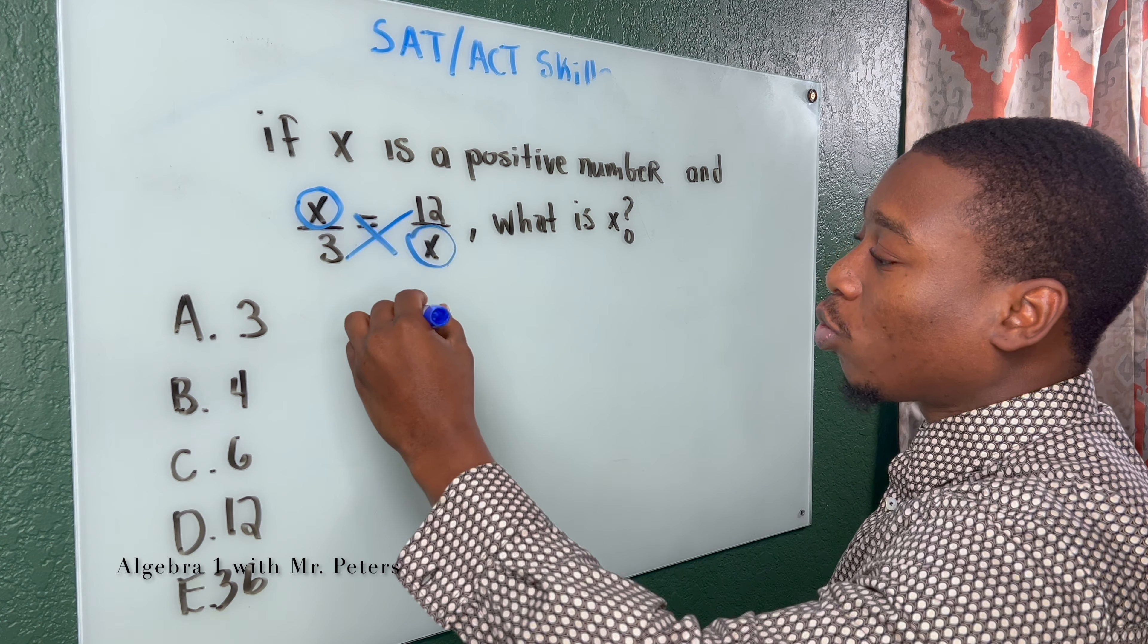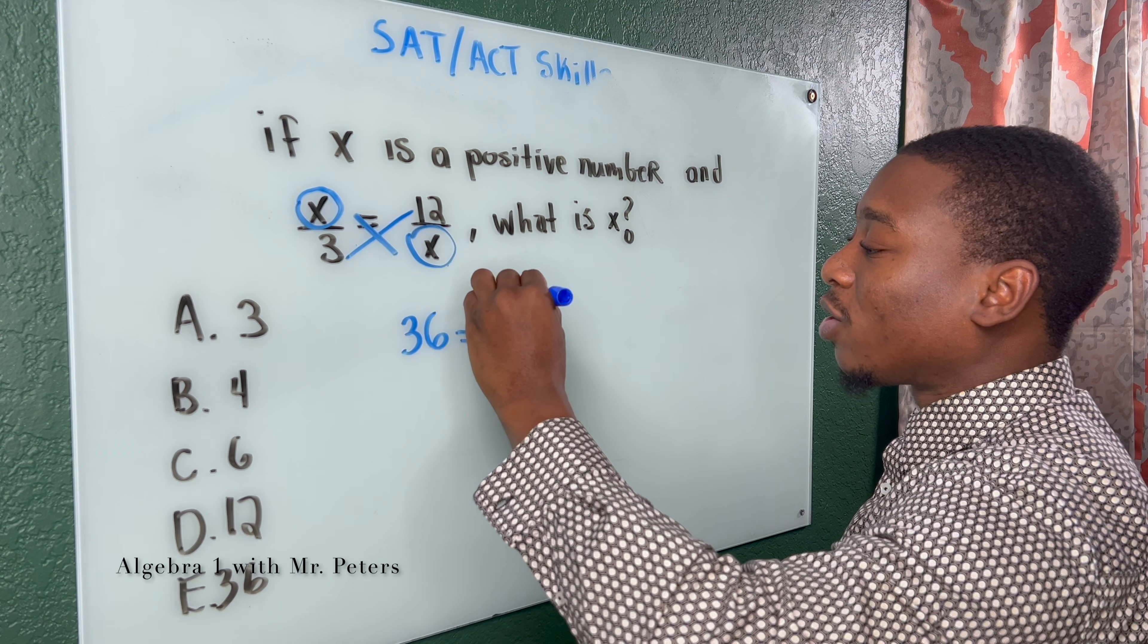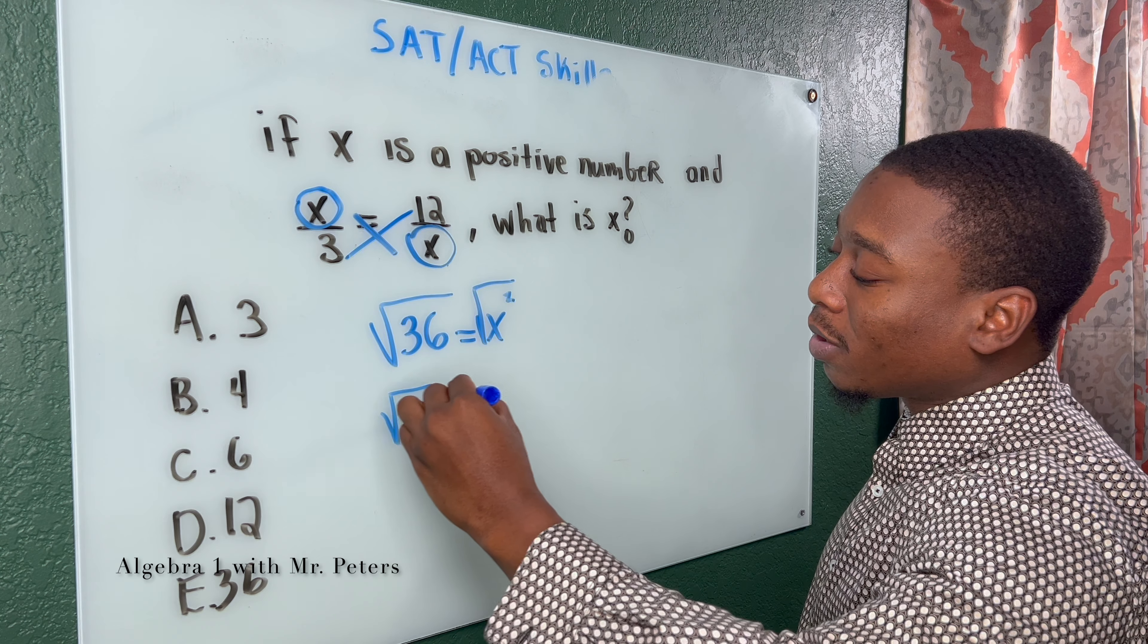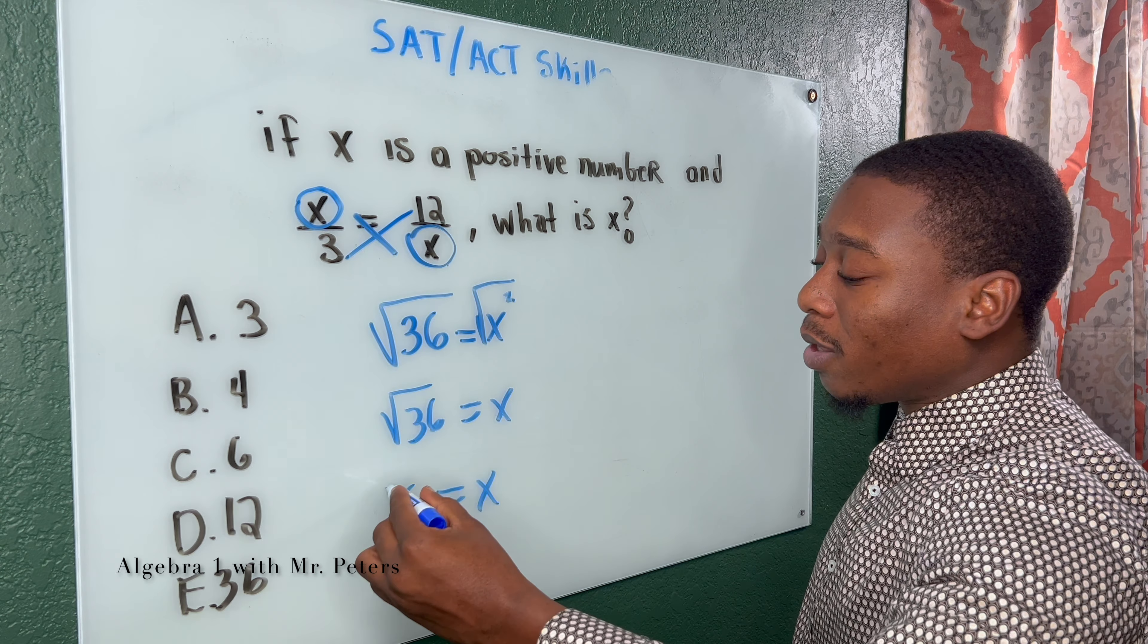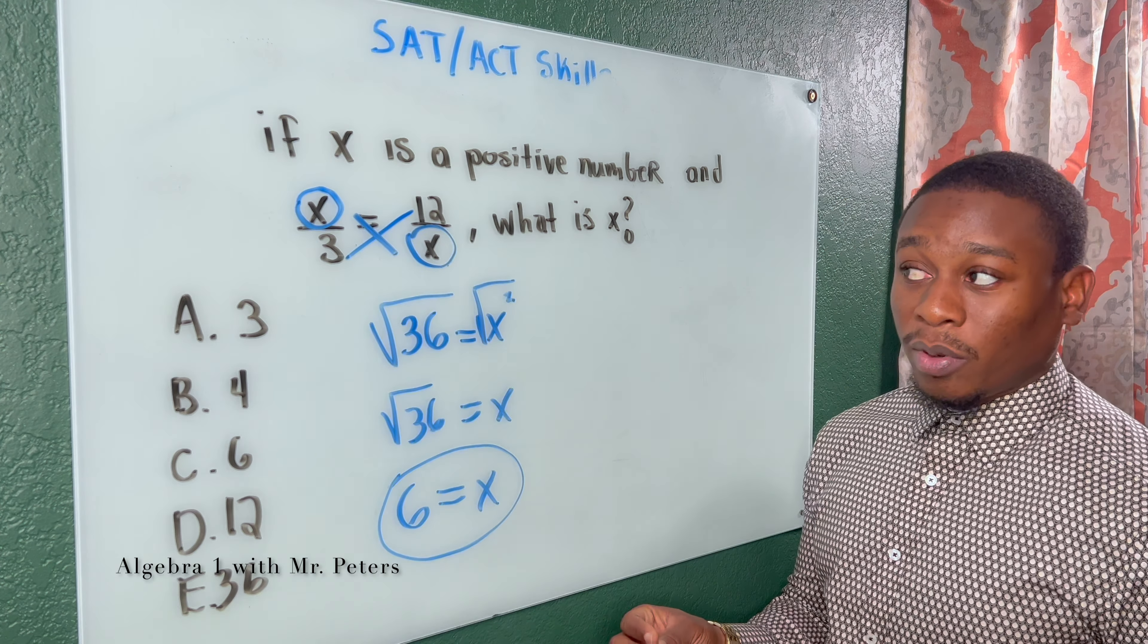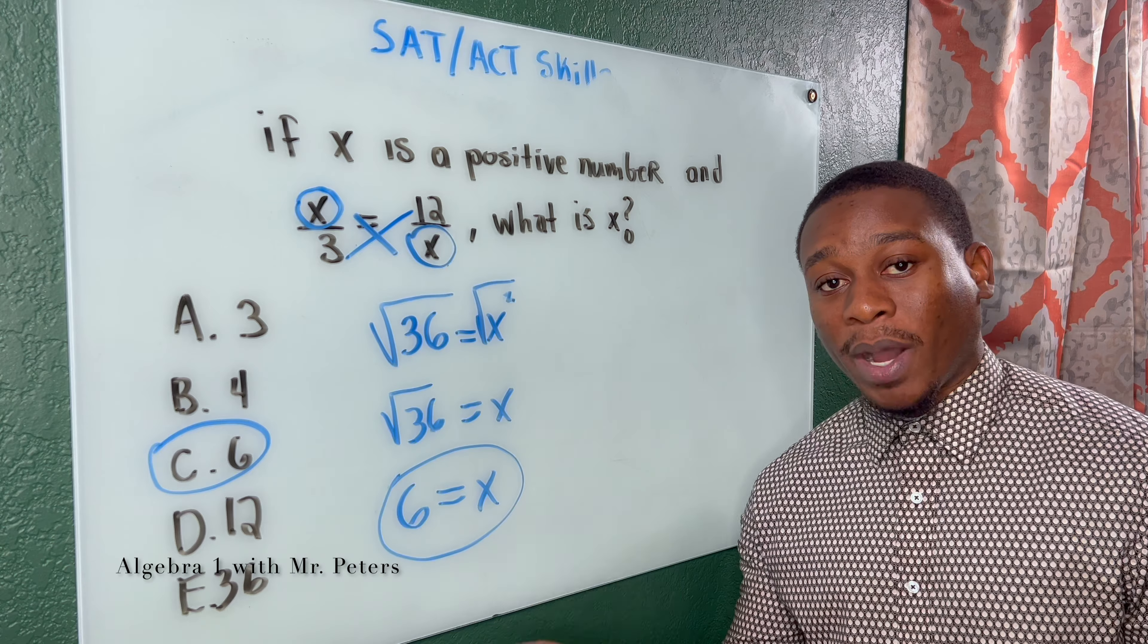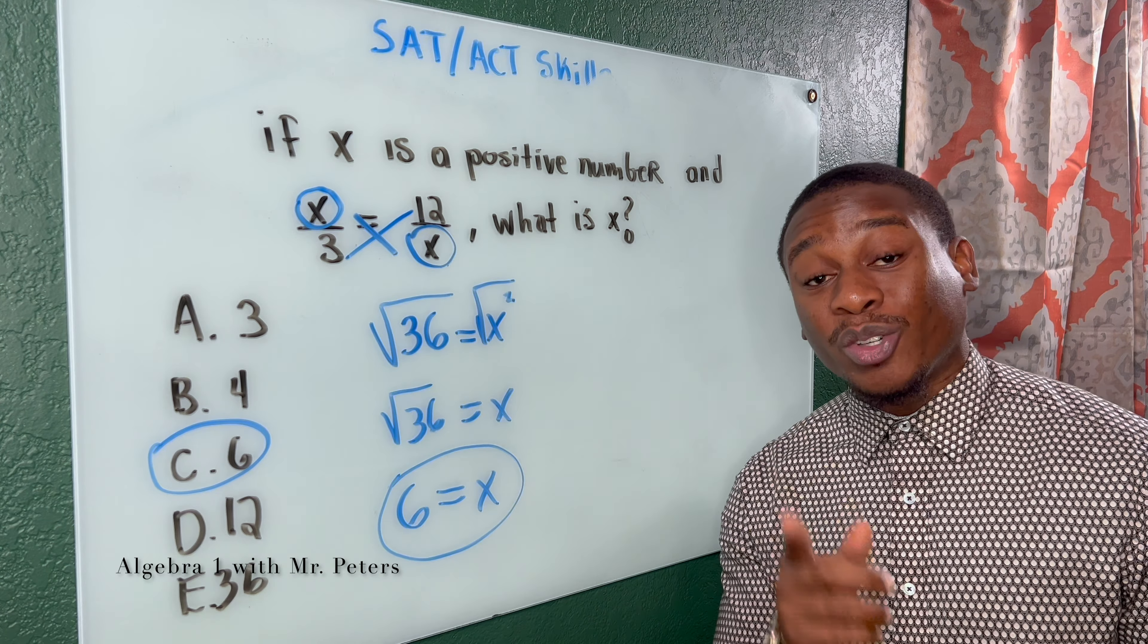So we have 3 times 12, which gives me 36. And X times X equals X squared. Now, once we find the square root, we know that the square root of 36 is going to be equal to X. And the square root of 36 is just 6. And this would be our final answer. So if you get a problem like this, just remember, go back to what you remember about solving proportions. The steps are still the same. They just try to trick you with this problem.